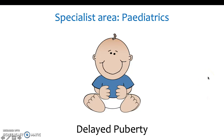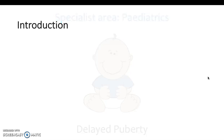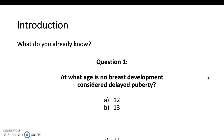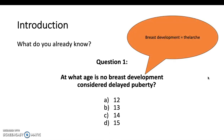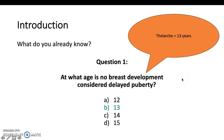Welcome to the presentation on delayed puberty under the specialist area of paediatrics. A few questions to get you started: at what age is no breast development considered delayed puberty? If you watched the Precocious Puberty video, you'll know that thelarche is another term for breast development. 13 years is the age at which thelarche would be expected, and if the child hasn't developed breasts by then, you would be worried that something is going on.